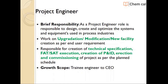Project Engineer: As a project engineer, the role is responsible to design, create, and optimize systems used in process industries like pharmaceutical or chemical industries. This includes working on upgradation or modification of existing facilities and creation of greenfield projects as per end-user requirements. Responsibilities include performing basic engineering calculations, knowledge of equipment design such as reactors, condensers, heat exchangers, chillers, dryers, and boilers, creation of technical specifications, FAT (factory acceptance test) and SAT (site acceptance test) execution, creation of P&IDs, erection and commissioning of projects as per planned schedule, and ensuring processes comply with safety and quality standards.